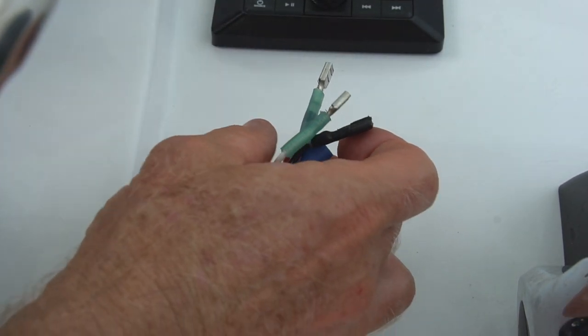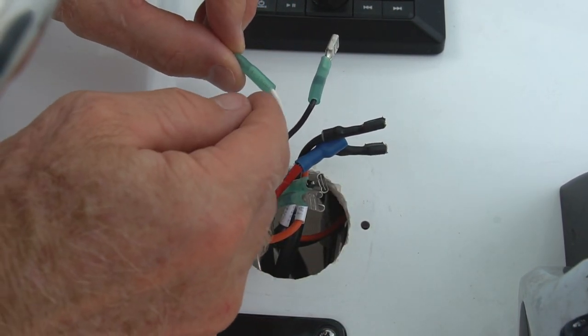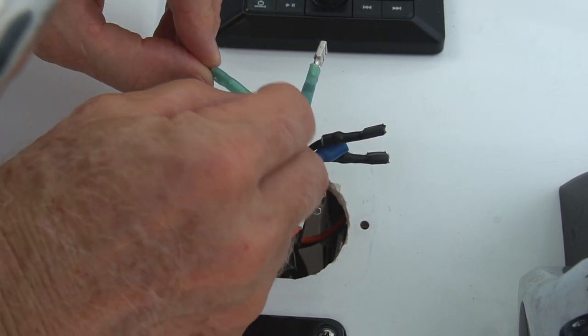Next, cut the push-on terminals off and strip about a quarter to three-eighths of an inch of insulation back from the end of each wire.